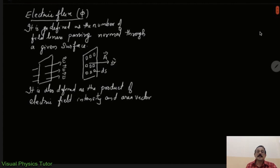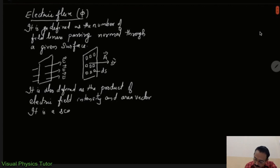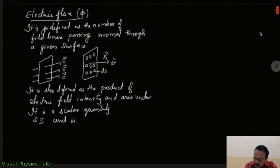Electric flux is a scalar quantity and its SI unit is newton meter squared coulomb raised to minus one.